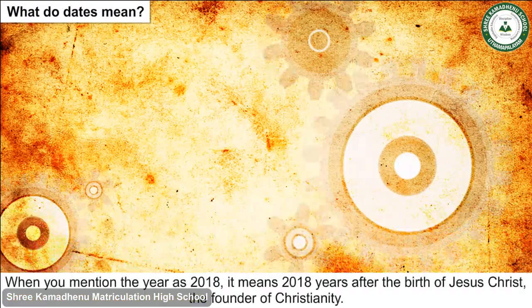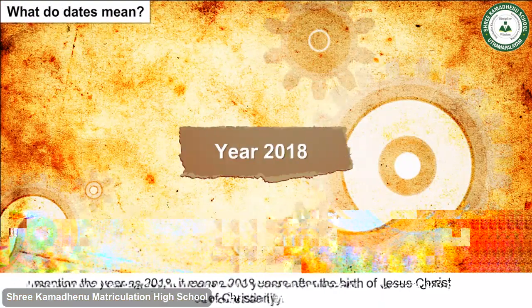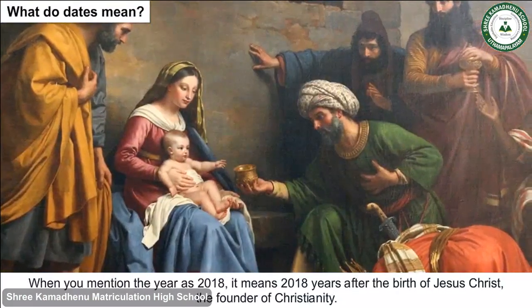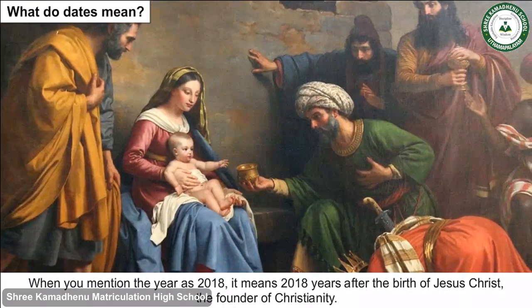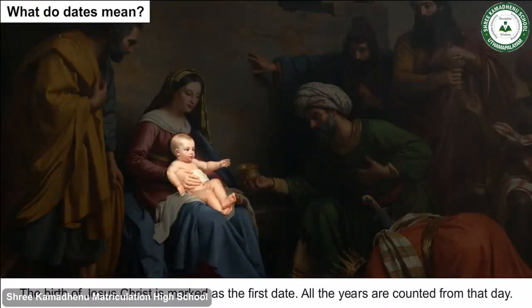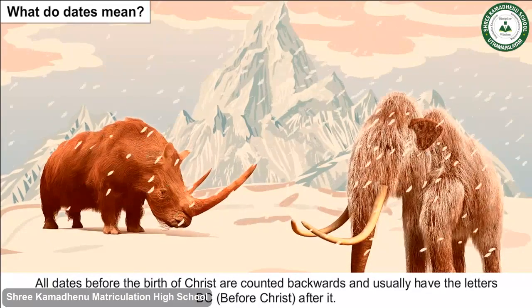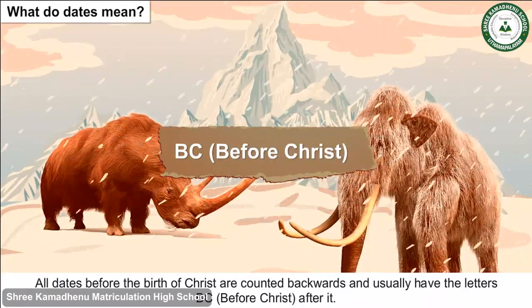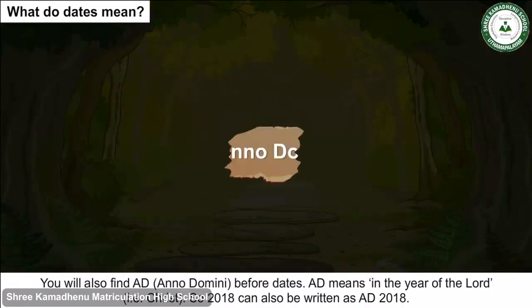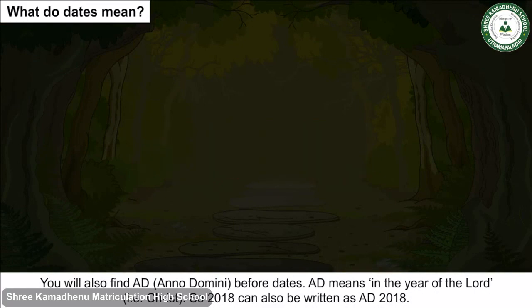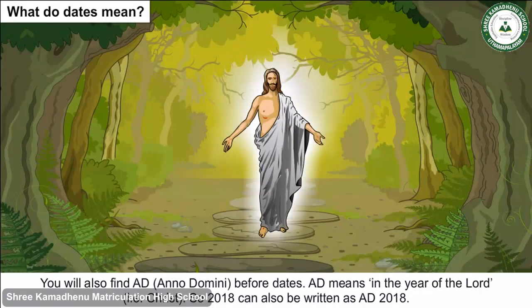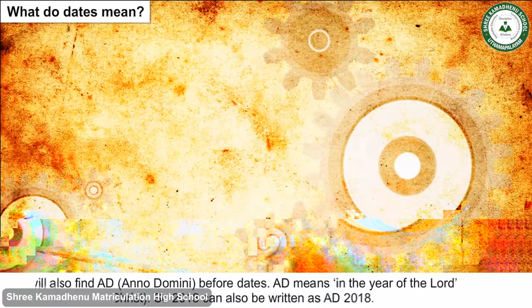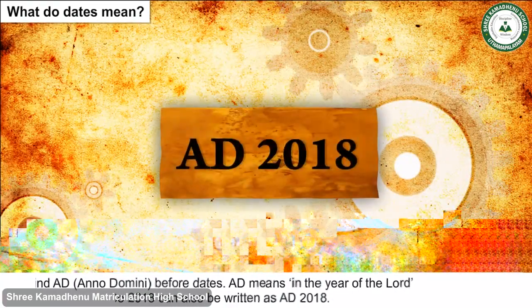When you mention the year 2018, it means 2018 years after the birth of Jesus Christ, the founder of Christianity. The birth of Jesus Christ is marked as the first date, and all years are counted from that day. All dates before the birth of Christ are counted backwards and usually have the letters BC, meaning 'Before Christ'. You will also find AD, meaning 'anno Domini' — in the year of the Lord, that is Christ. So 2018 can also be written as AD 2018.